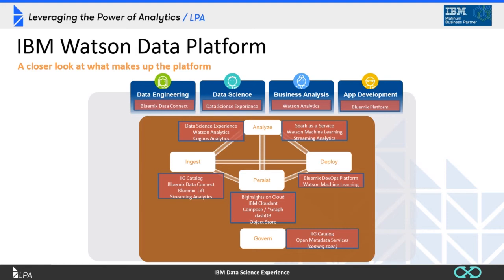Each step — ingest, analyze, persist, deploy, and govern — has different tools that IBM provides. Whether that's a Spark service available in the cloud for doing analysis, or Data Science Experience itself using a cloud Spark service, or Watson Machine Learning for deploying a predictive model you've previously built. Each step is supported in some way by the Watson Data Platform, which continues to grow as IBM improves cloud capabilities and makes enhancements to existing tools.